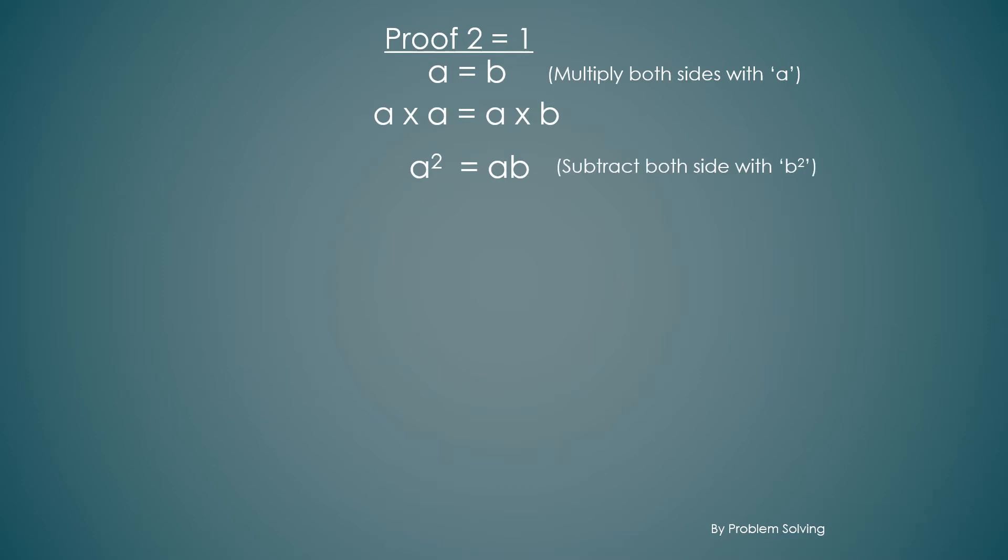Now subtract both sides with b squared and we get a squared minus b squared equal to ab minus b squared.